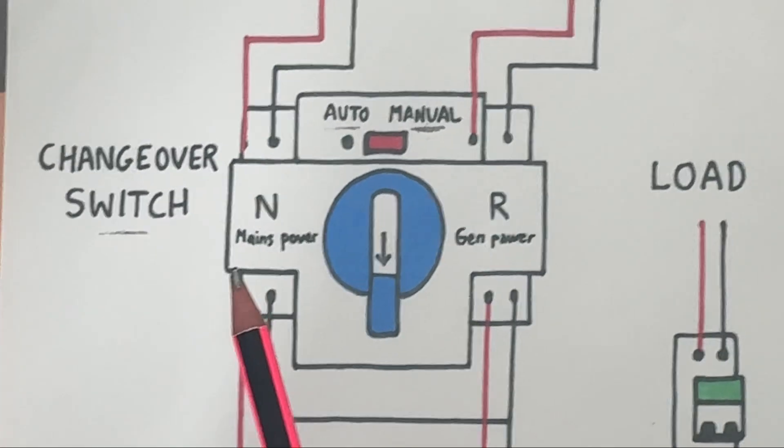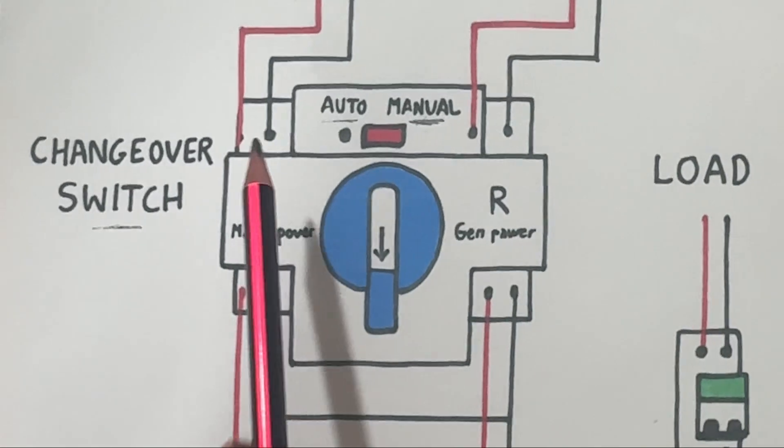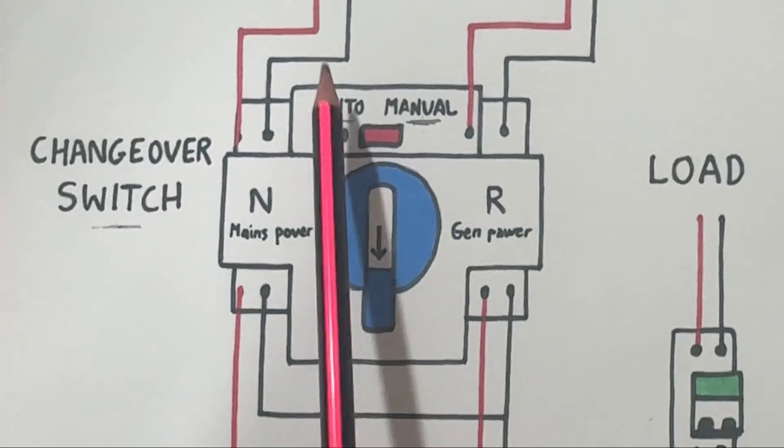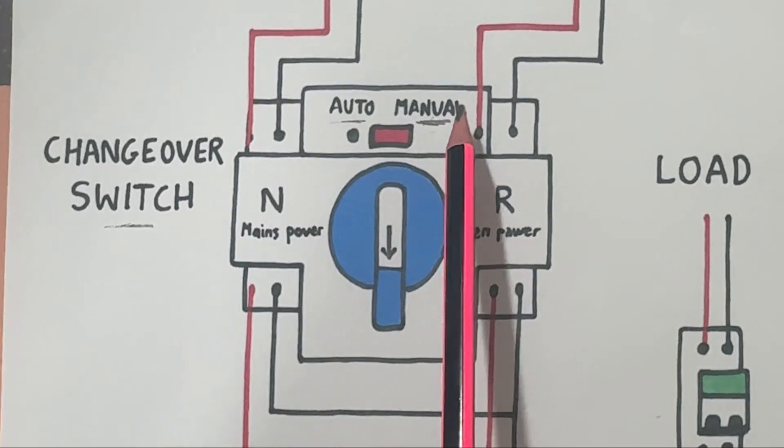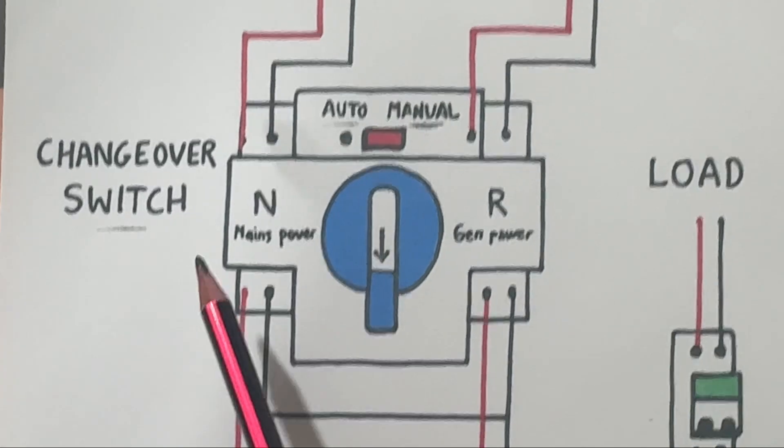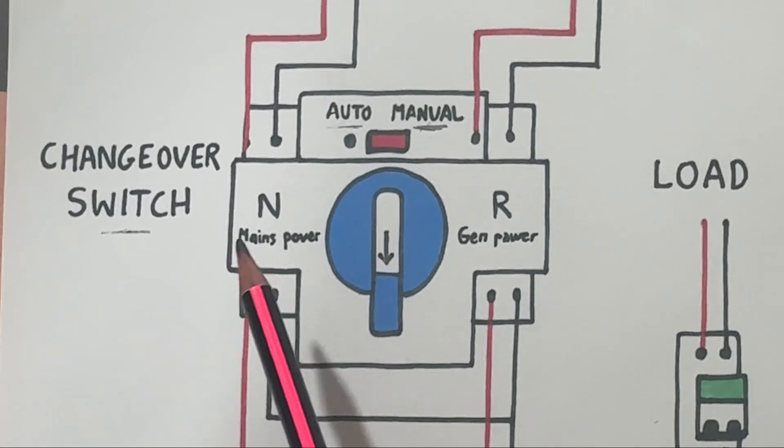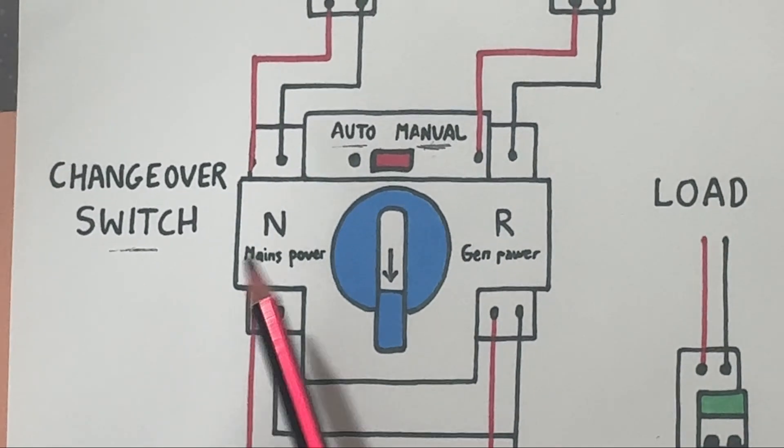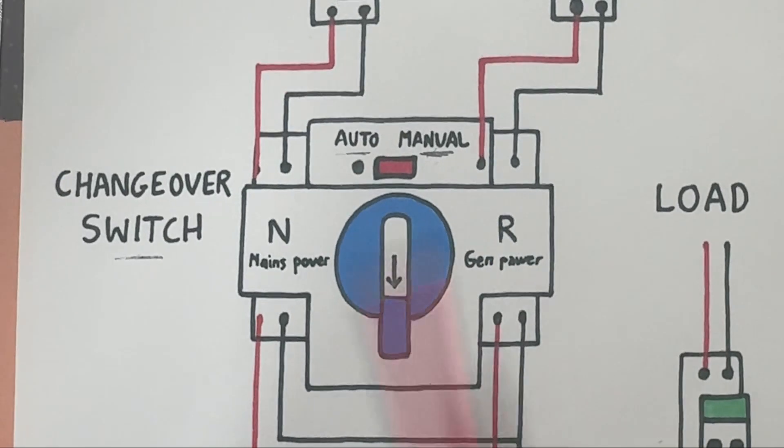Manual and auto mode. You can see a three selector switch on top marked auto manual. In auto mode, the system operates automatically, switching between grid and generator on its own.